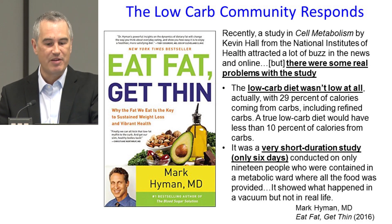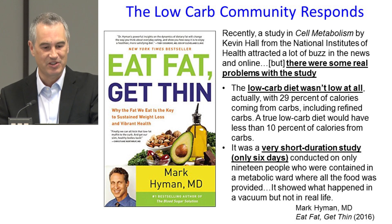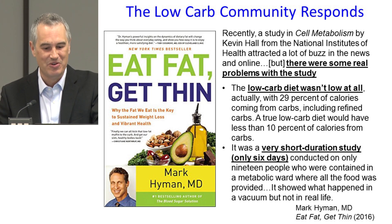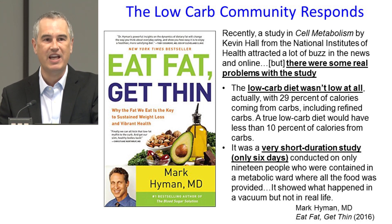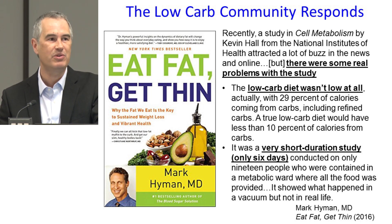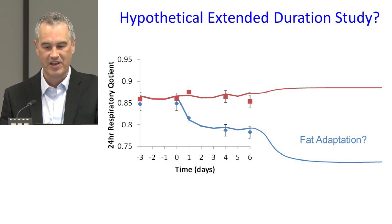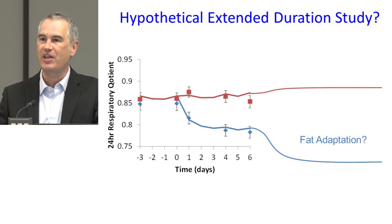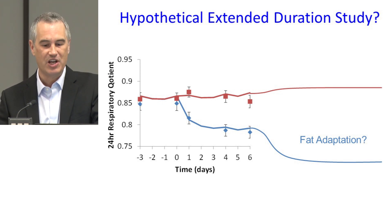When we published that paper, there was a lot of response from the low-carbohydrate community, in particular from Mark Hyman, associated with the Cleveland Clinic, who had a book out at the time called Eat Fat, Get Thin. He wrote that this wasn't a true low-carbohydrate diet — it was only 29% carbs — and that you really have to get down to 10% of calories from carbohydrates to see an effect. He also argued it was only a very short study, and if you waited a little longer you would have seen people adapt to the low-carbohydrate diet and increase fat oxidation. I can't deny that such a thing might happen — maybe if we'd waited a little longer we would have seen the respiratory quotient drop further — but we didn't do that study.